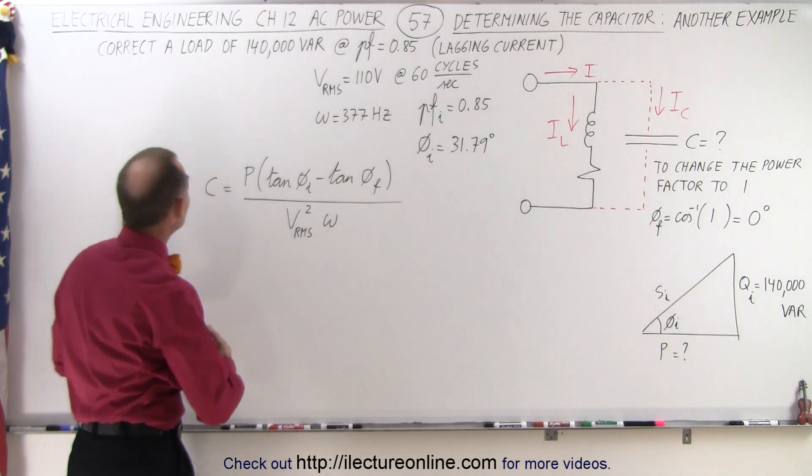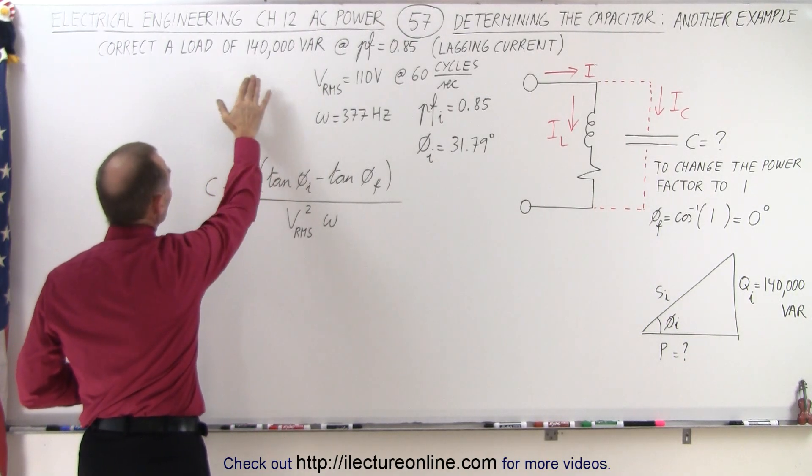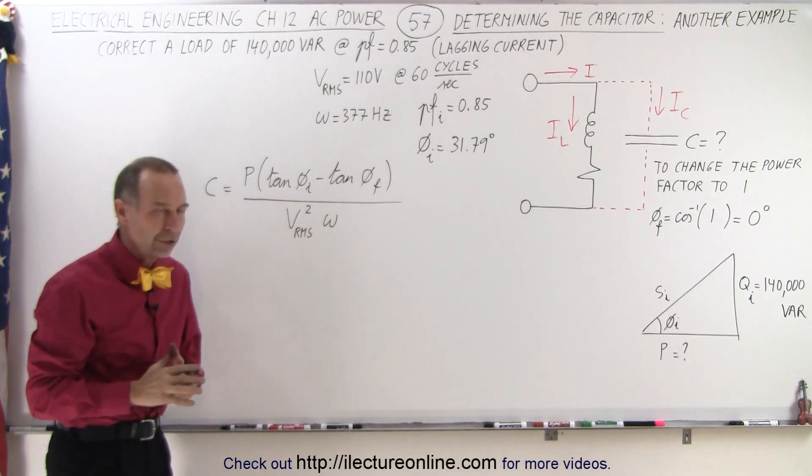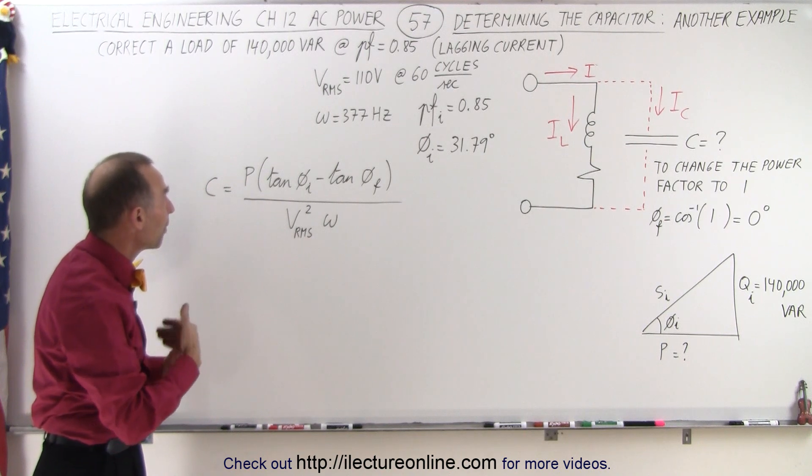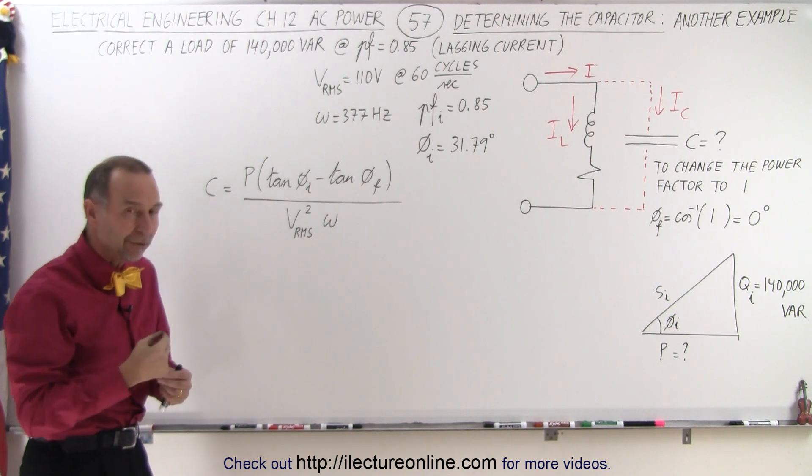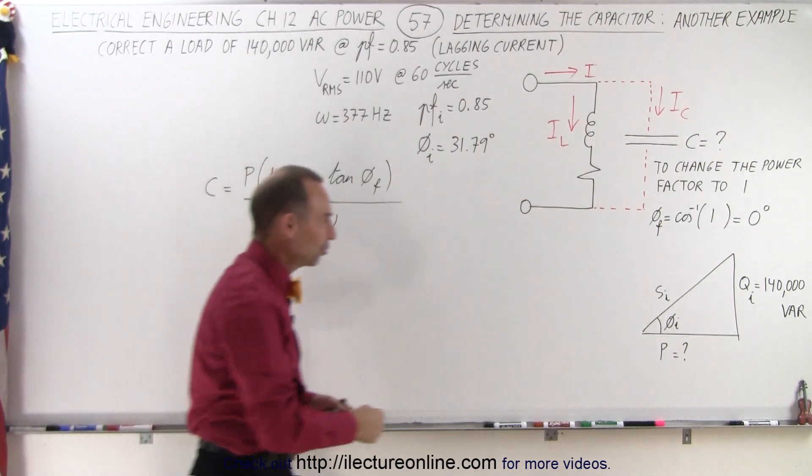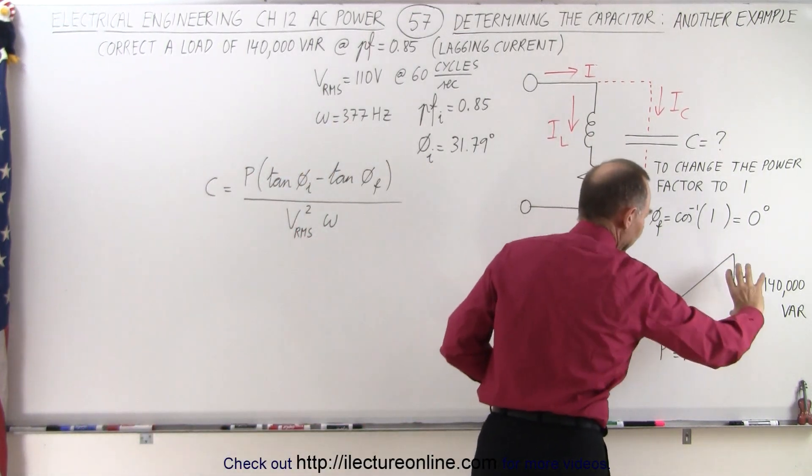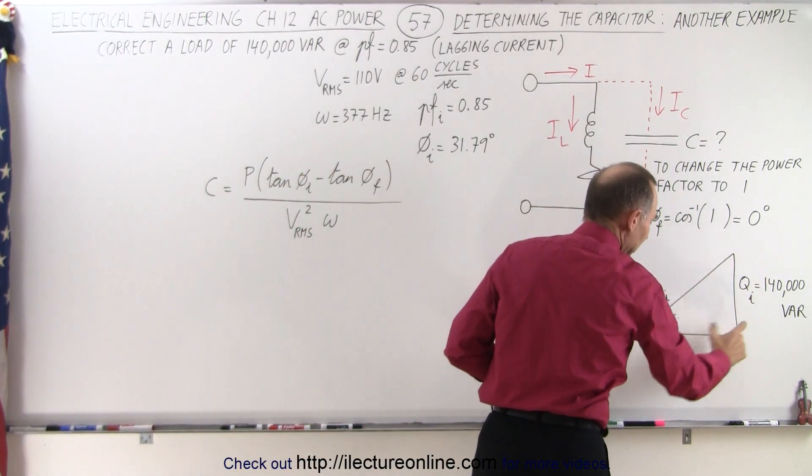They gave us some information. They tell us that the load is 140,000 VAR. Now when they say VAR, that means volt ampere reactive. That means they give us the reactive power of the circuit, which when we draw the power triangle, that's equal to the opposite side right here.